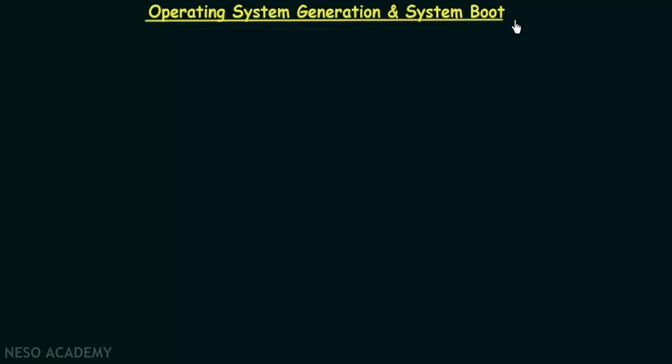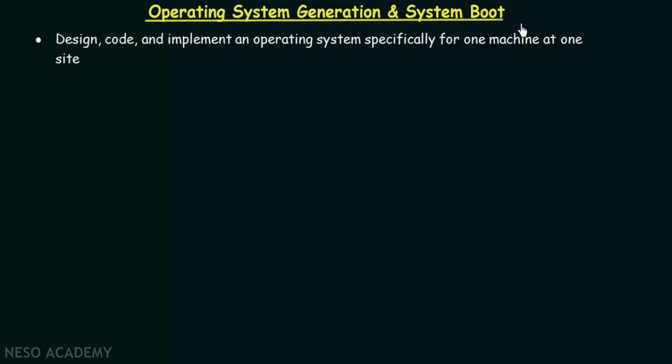There are two approaches in which an operating system can be designed. The first approach is to design, code, and implement an operating system specifically for one machine at one site. We are designing the operating system specifically for one machine, looking only at its requirements. This may be a good approach if you are only concerned about one machine, but in a larger perspective, it may not be very efficient because we want our operating system to work in multiple systems without having to redesign it.